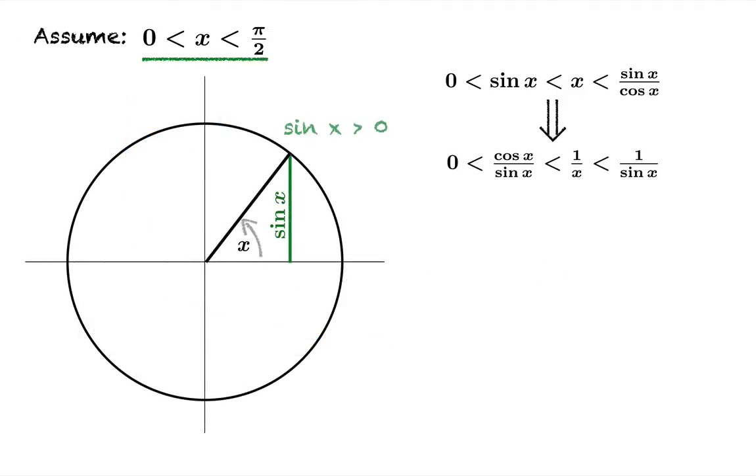Now we're going to use this fact that x is between zero and pi over two. If that's the case then sine x has to be positive. And if sine x is positive then we can multiply by sine x and we don't have to worry about the direction of the inequality changing on us. So we can multiply through by sine x and we get this new chain of inequalities.